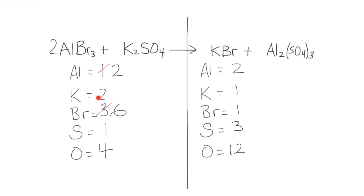Aluminum is now balanced, so we move to the next metal: potassium. We have two on the left but only one on the right, so we put a two out front of the potassium bromide on the right. That multiplies everything in that compound by two, changing potassium to two and also changing bromine to two. Aluminum is still good, and potassium is now okay.